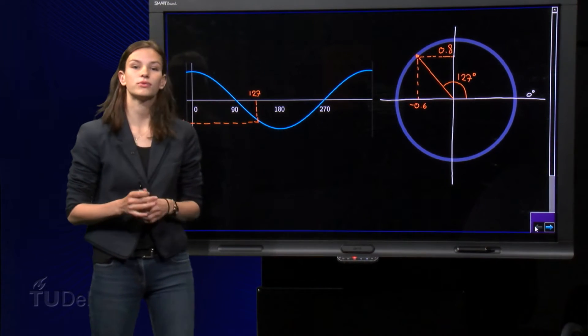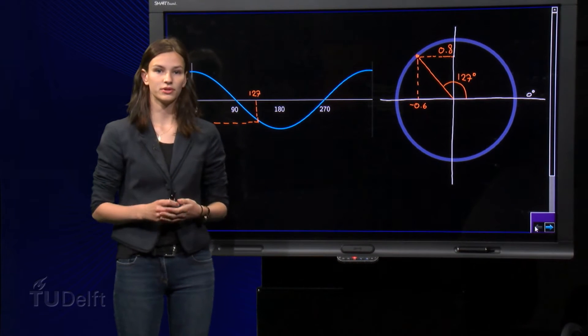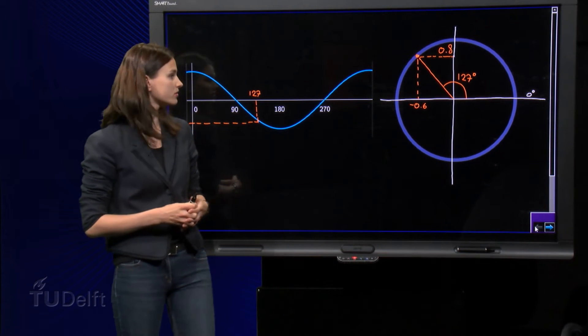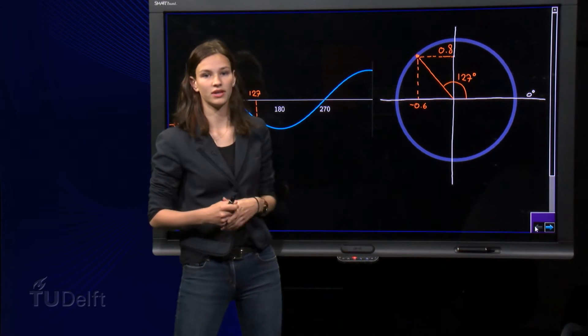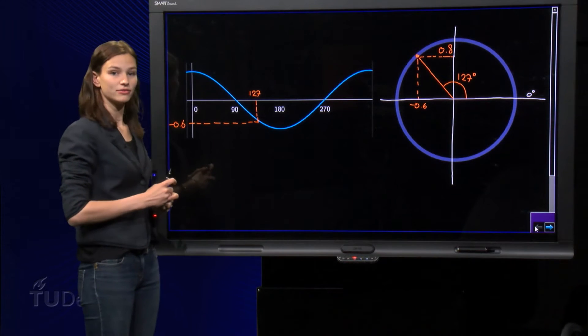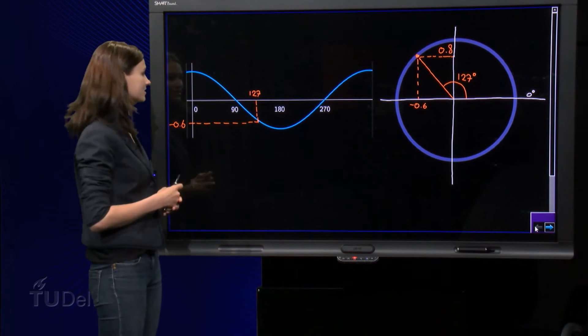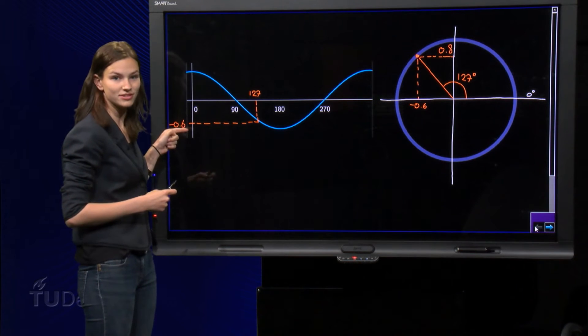The cosine of 127 is negative, which can be seen directly in a unit circle as the x-coordinate of this point is negative. We can also look at the graph of the cosine and notice that it is below the y-axis for 127 degrees.